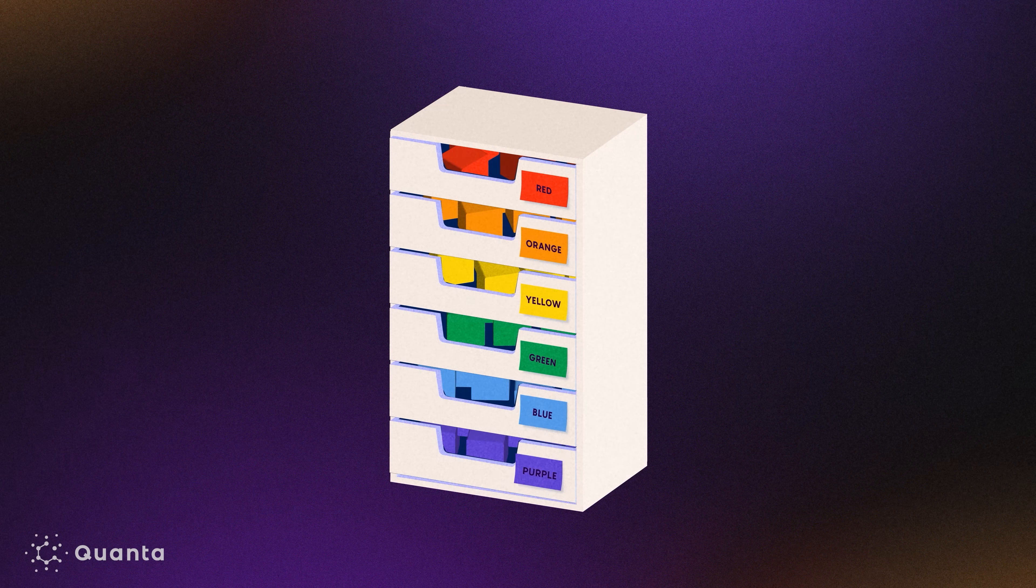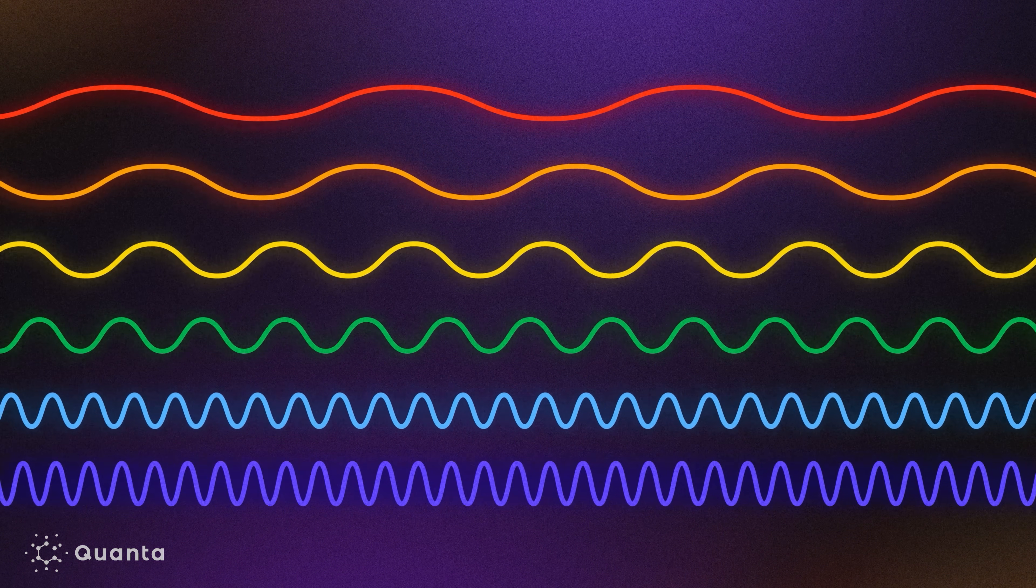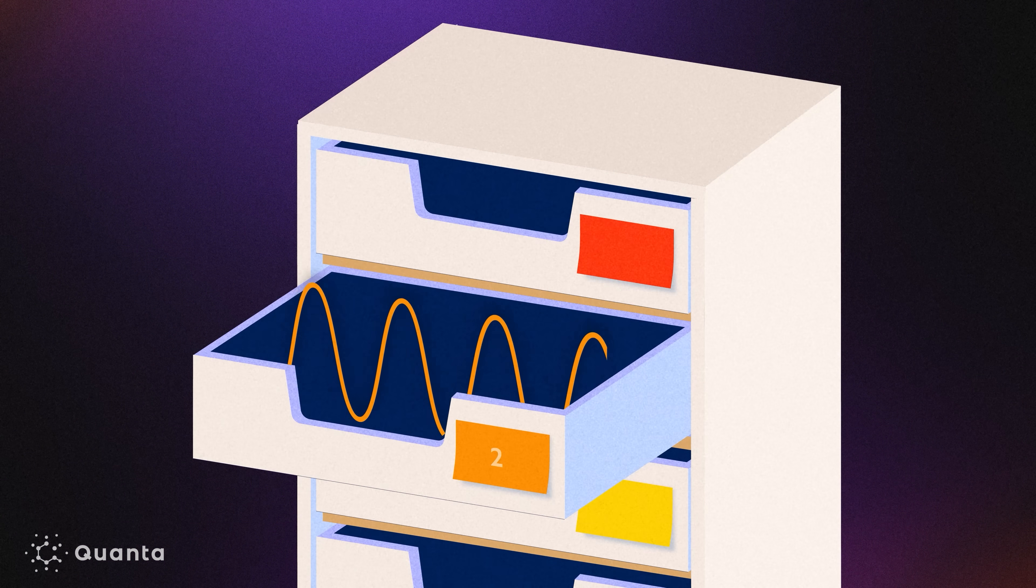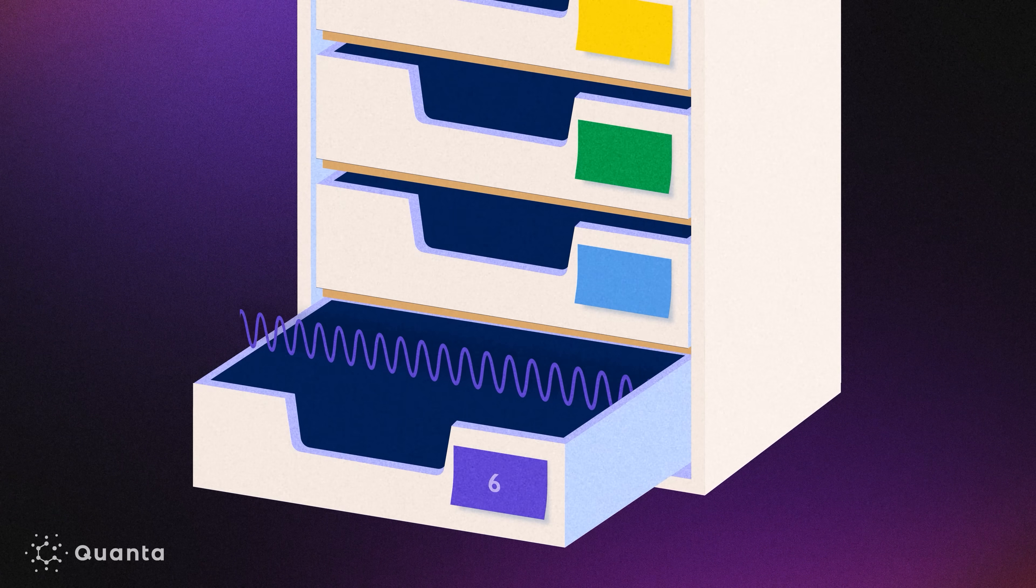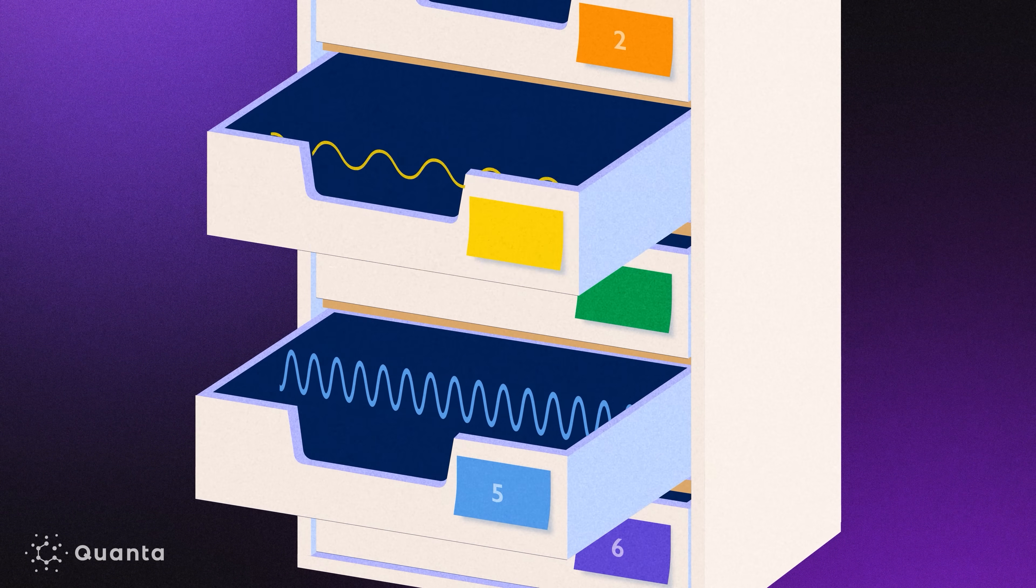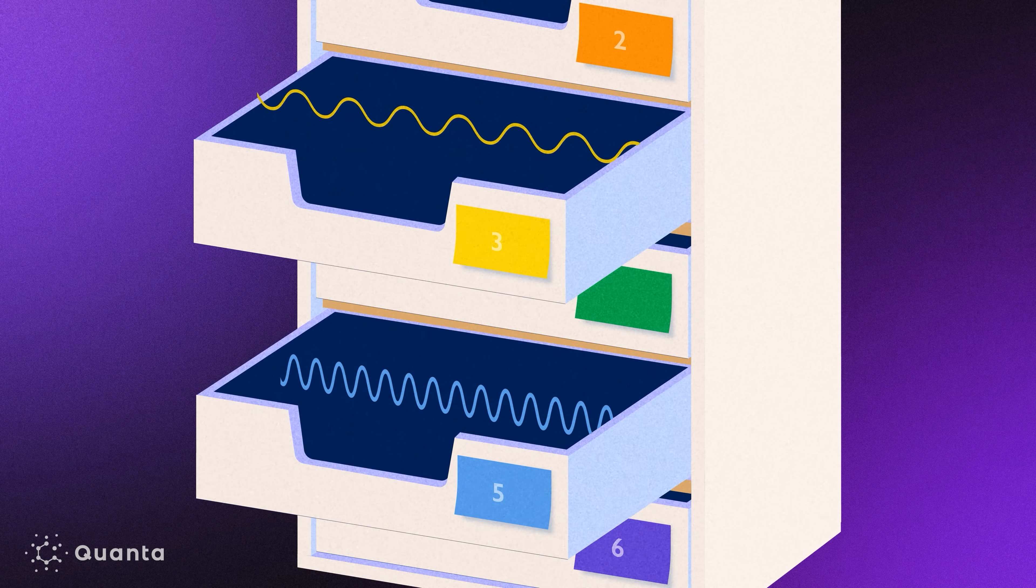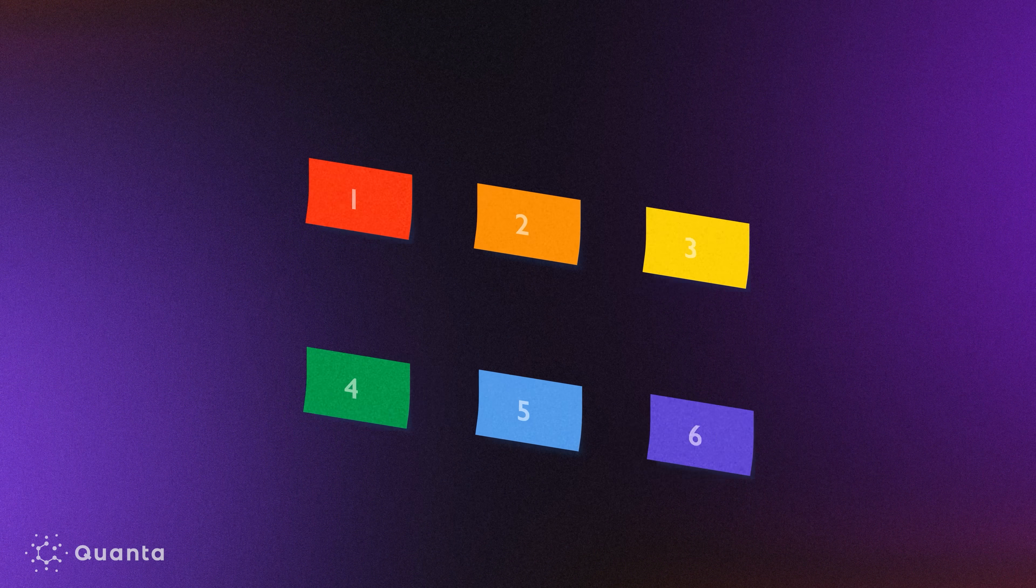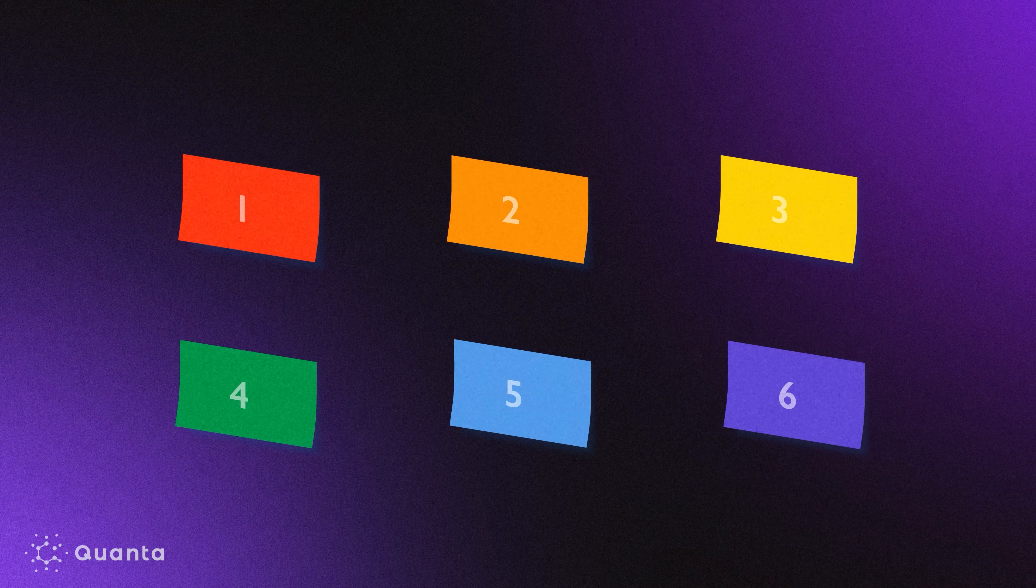And these building blocks can then be sorted by color into bins and labeled. Similarly, the Fourier transform disassembles a complex wave into individual sine waves. These are like the building blocks. Each sine wave can be labeled with its frequency, or how quickly it oscillates per second. The labels on the bins are more than just a way to organize things. They can be used to rebuild the original complex wave, and as an efficient shorthand for communicating information.